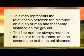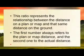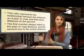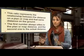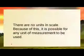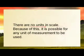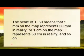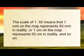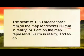The first number always refers to the map distance and the second one to the actual distance. So you'll see 1 to 50: that first one is the one on the map, the second one is the one in reality. The cool thing about scales is that there are no units in scales, and because of this it's possible to do any unit of measurement — it's very flexible and you can pick and choose which one works for you. The scale of 1 to 50 means that one millimetre on the map represents 50 millimetres in reality.